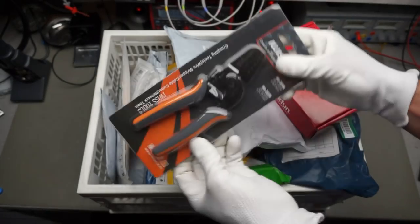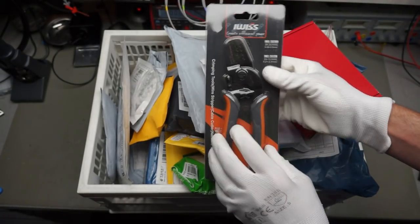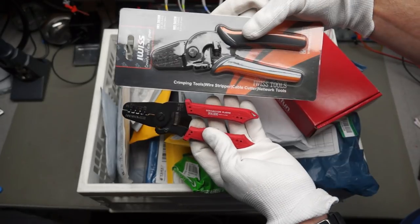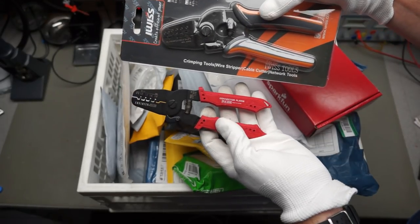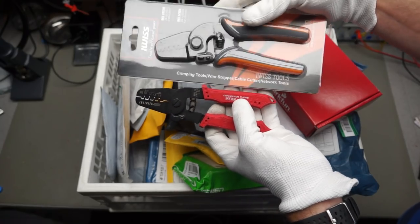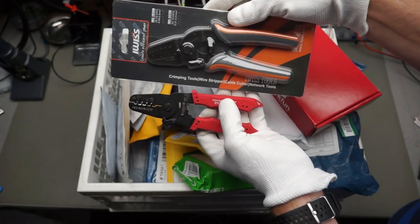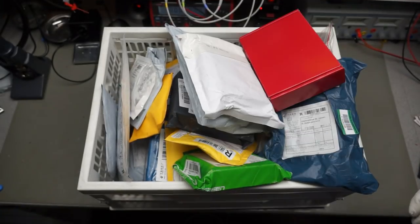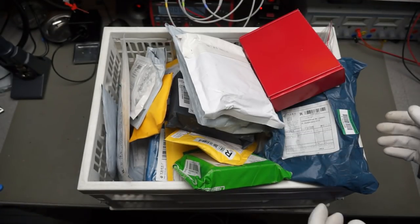Then, I got an IWISS crimper, also recommended by viewers. It was recommended as an alternative to this ENGINEER PA09 crimper. And maybe I will do a short video about that. So, let's start with the rest.